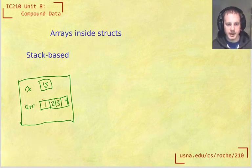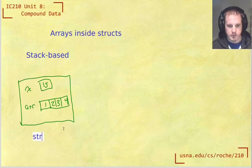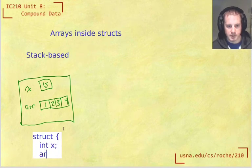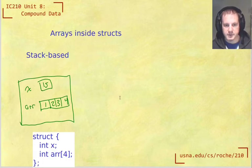So if we use stack-based, this data type for the picture that I just drew would be something like - I don't have to give this struct a name - I'll just say that it has int x and int arr[4]. That's a stack-based array inside a struct.